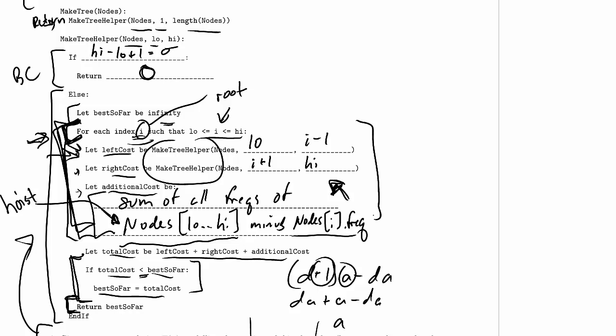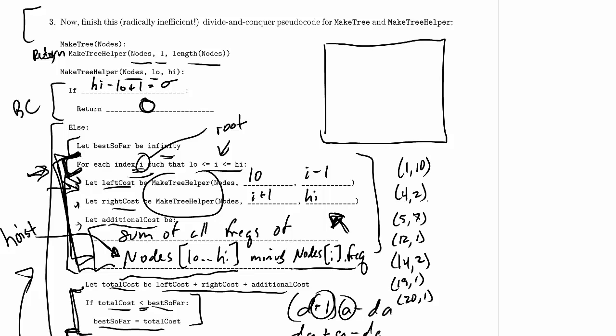The recurrence I want is the minimum over all choices of the root: the left cost plus the right cost plus the additional cost — that's the best solution. I'll draw my table. I need to know what my nodes actually are, so I'll magically copy everything here and it will appear locally.